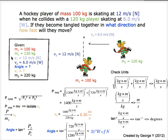What is asked is the direction in which they will move, so the angle, and how fast they will move, which is the third velocity. We can also infer from the information given that the mass of the two hockey players combined is 220 kilograms.